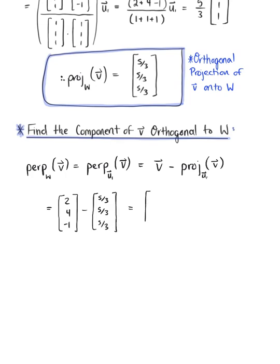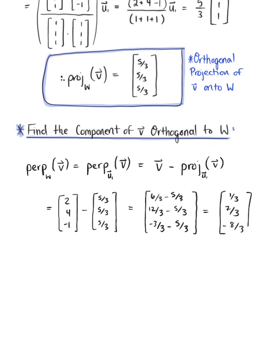Getting a common denominator and combining like terms: we have 6/3 minus 5/3, which leaves us with 1/3. We have 12/3 minus 5/3, which leaves us with 7/3. And last but not least, we have -3/3 minus 5/3, which leaves us with -8/3. Therefore, the component of vector v orthogonal to subspace W is the vector with components 1/3, 7/3, -8/3.